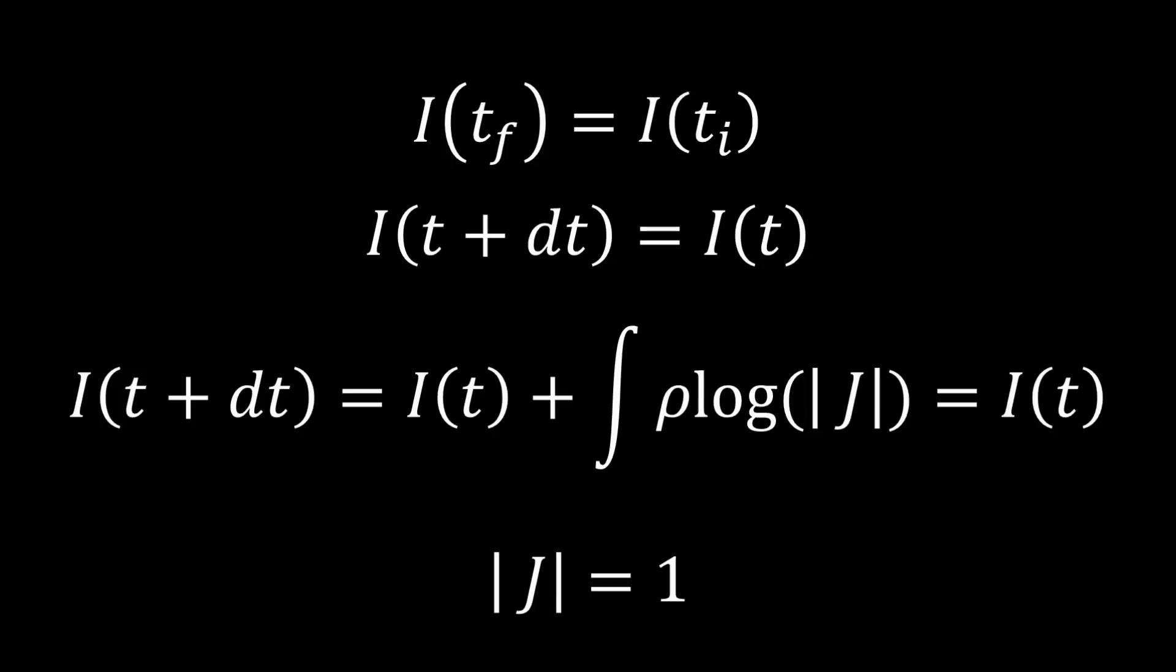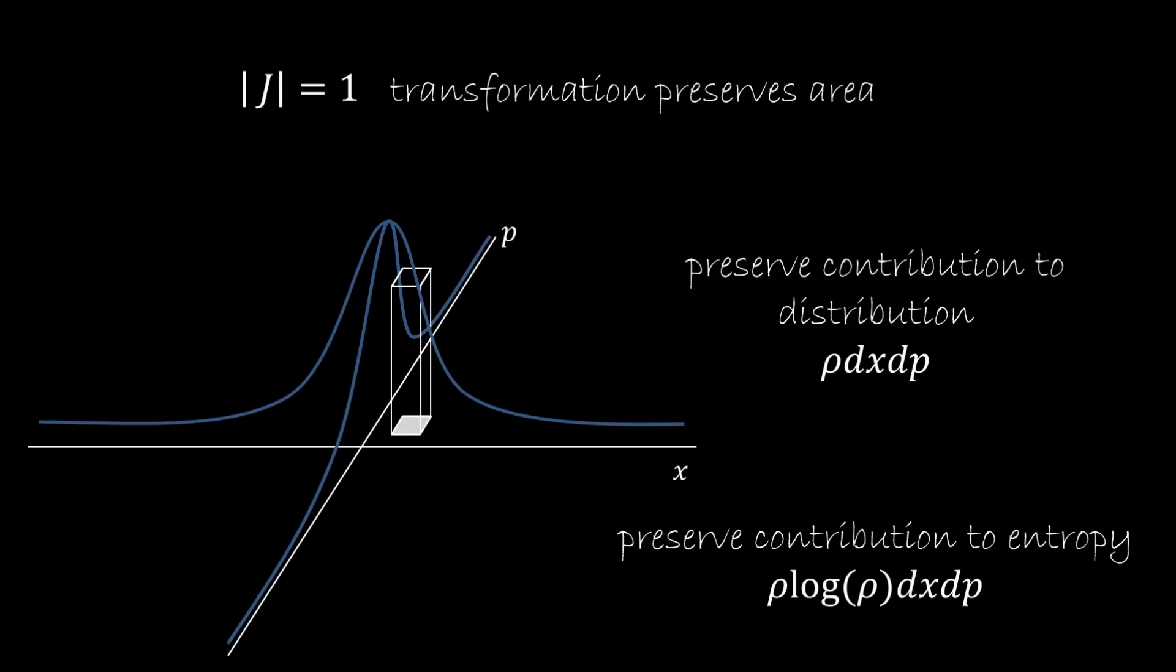So why do we need the Jacobian to be one? Well, if we're transforming any infinitesimal element, we need to conserve two things. First of all, we need to preserve the contribution to the distribution because if this element represents 1% of the distribution at the initial state, it's going to need to represent 1% of the distribution of the final state. But we'll also need to preserve the contribution to entropy. So this element needs to give the same contribution. So in order to do that, if the area would increase, then of course the rho would go down.